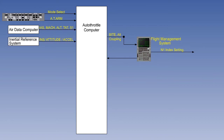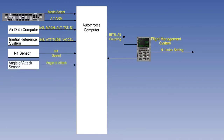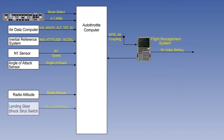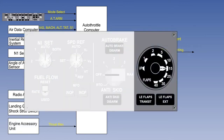Attitude and acceleration supplied from the inertial reference or inertial navigation system. Speed of the N1 rotor from the N1 sensor. The aircraft angle of attack from the angle of attack sensor. The actual height above ground from the radio altitude. Air/ground logic from the switch on the landing gear strut. Thrust reverse position from the engine accessory unit. And flap position.